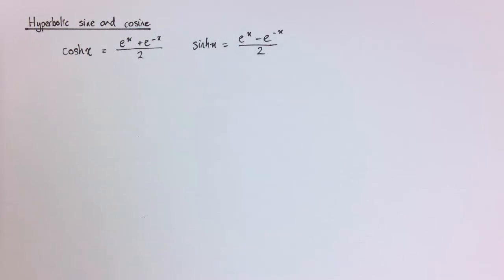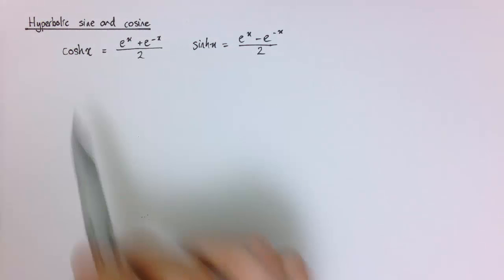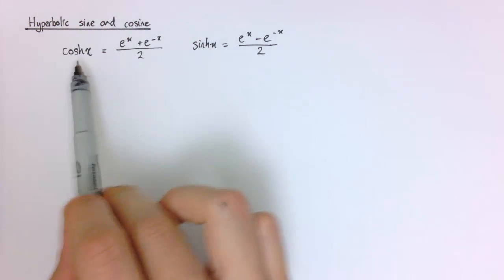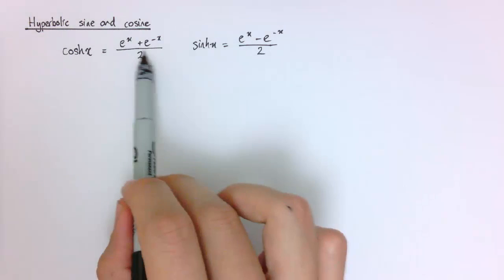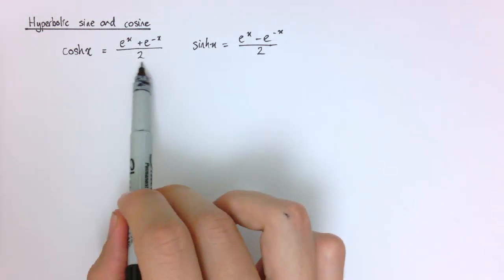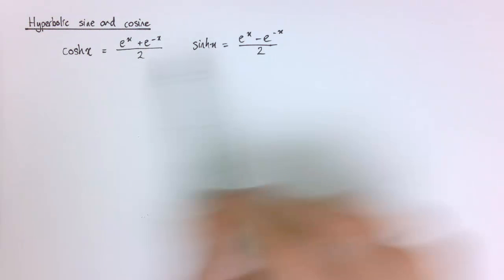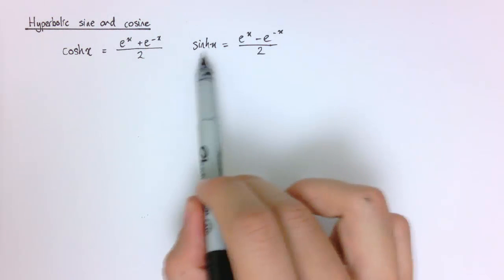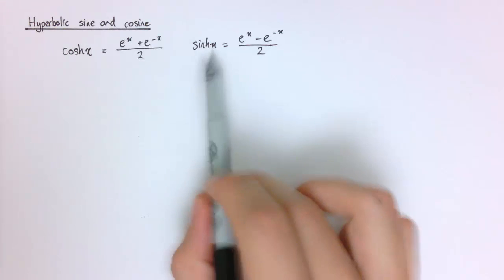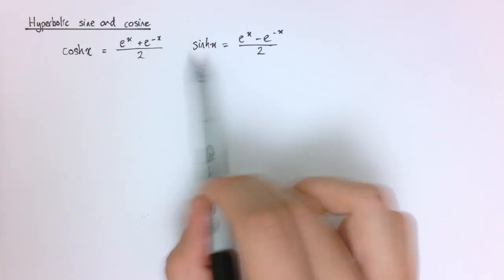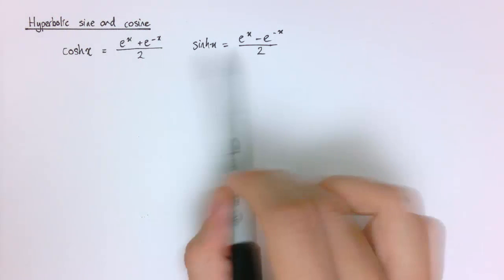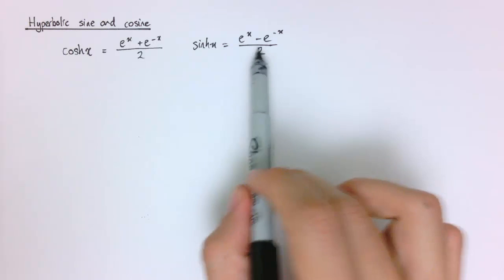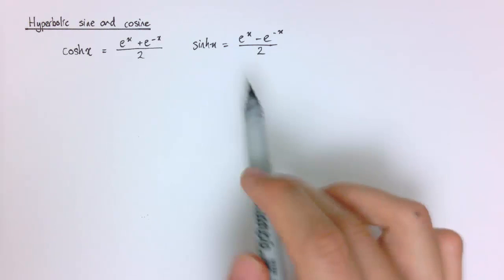Here are the hyperbolic sine and cosine functions. Firstly, cosh x is e to the x plus e to the minus x divided by 2. And sinh x — sometimes called 'cinch' — the hyperbolic sine of x, is e to the x minus e to the minus x divided by 2.